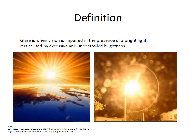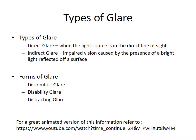Glare is when vision is impaired in the presence of a bright light. More specifically, glare occurs when the light source, either from the sun or artificial light, produces a luminance that is greater than the eye can adapt to. The most common causes of glare are when light is seen either directly from its source or via reflection.